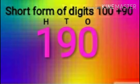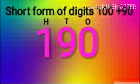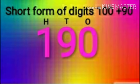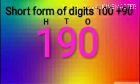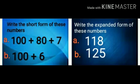अब हम next example देखते हैं: 100 + 90. It is in expanded form. Notice there is no ones digit here. To find its short form: 100 की face value is 1, so we place it under H. 90 की face value is 9, so we place it under tens. कोई भी digit ones के नीचे नहीं है, so we put 0 in the ones place. Then we find the short form of this number: 190. So students, do practice of this work in your mathematics copy.